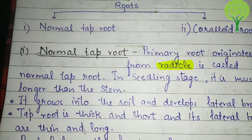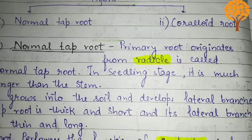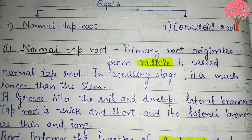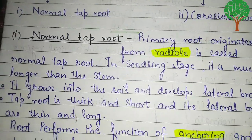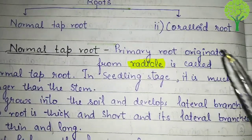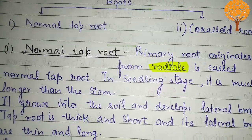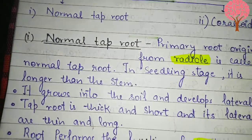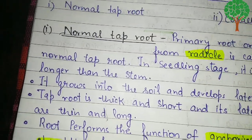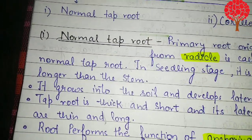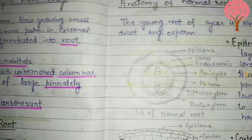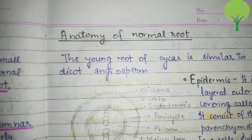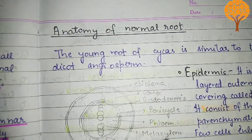The coralloid root is different from the normal root and their functions are also different. In this video we mainly consider the tap root, and in the next video we will study about the coralloid roots. Now, the anatomy of the normal root is also similar to that of a typical dicot angiosperm.